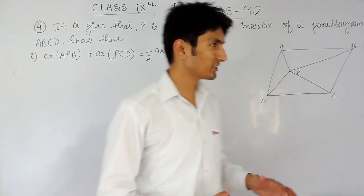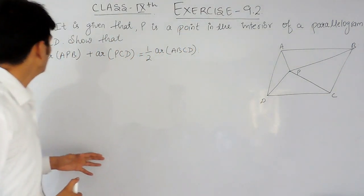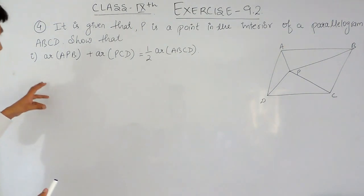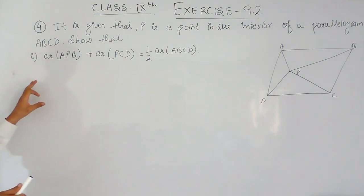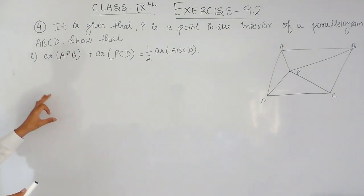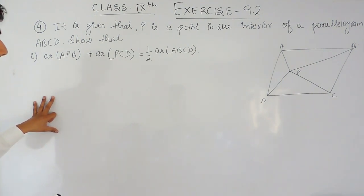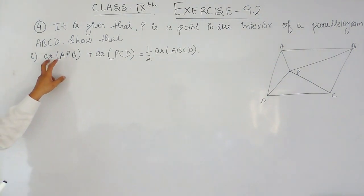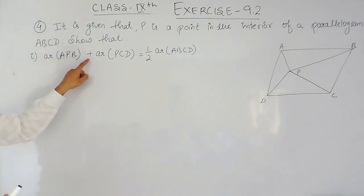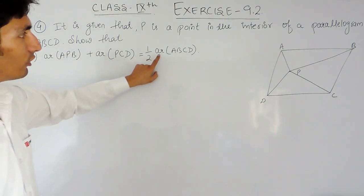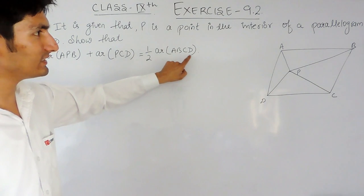Hello everyone. In this video, we are going to solve the fourth question of exercise 9.2. This question has two parts and we are going to solve the first part in this video. The question says: it is given that P is a point in the interior of a parallelogram ABCD. We have to show that the area of triangle APB plus the area of triangle DPC is equal to half of the area of parallelogram ABCD.